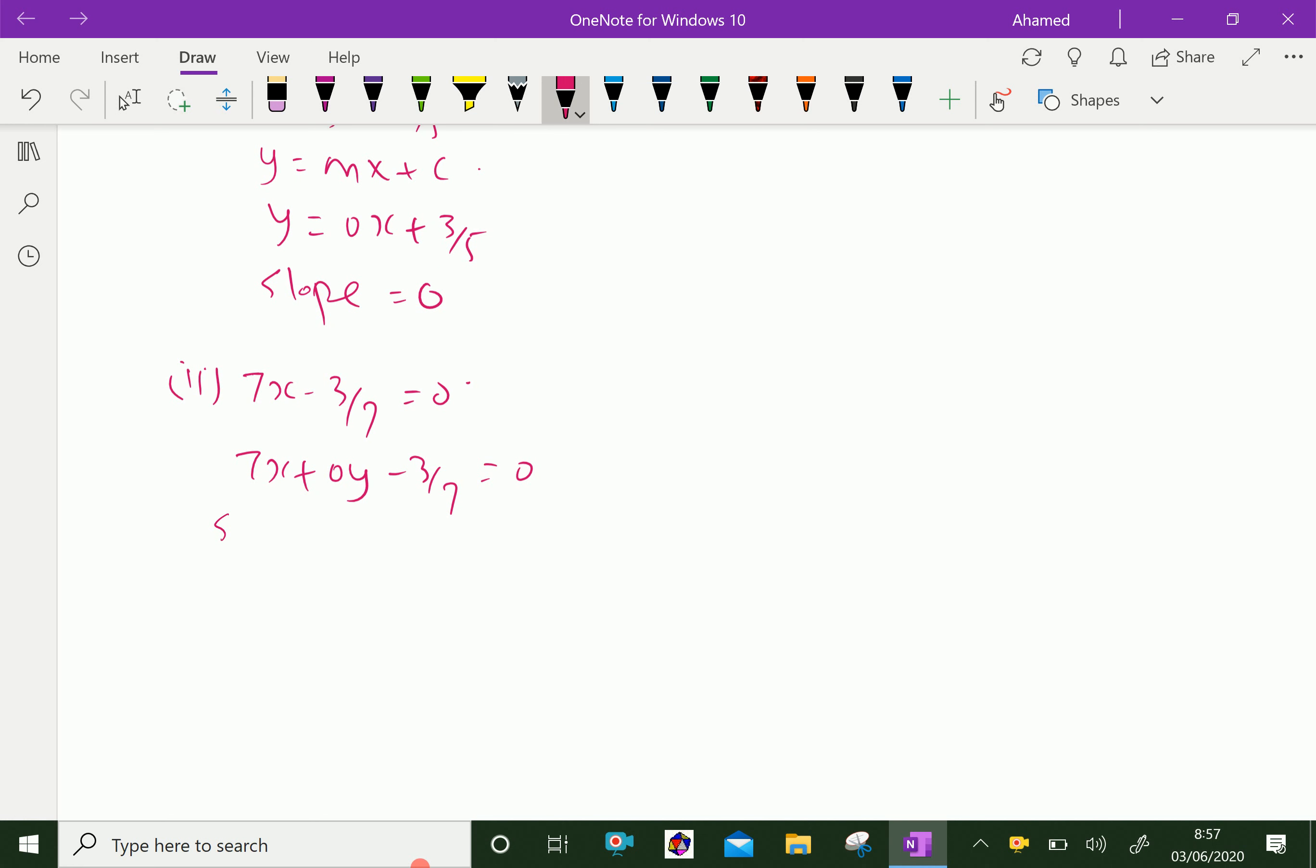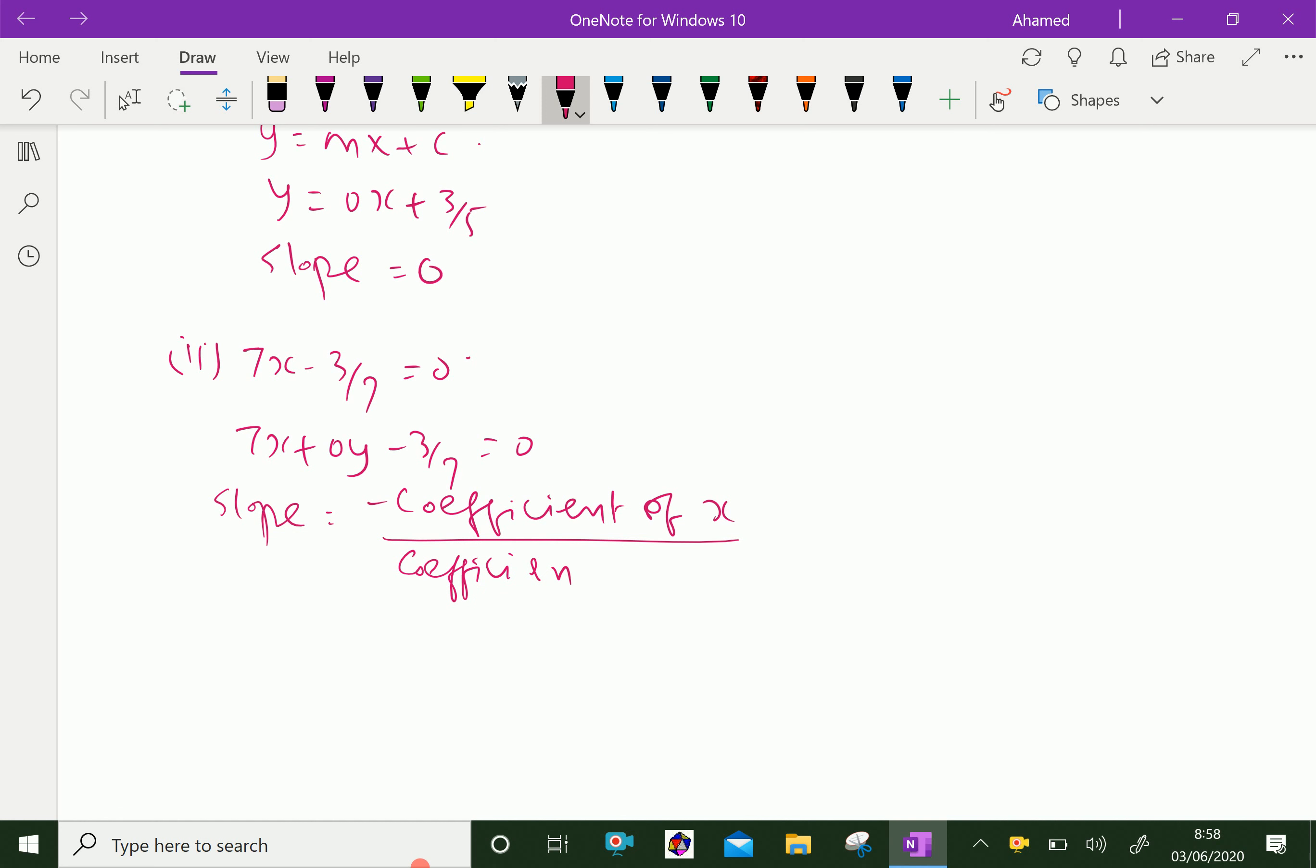Slope equals minus coefficient of x over coefficient of y. So here, coefficient of x is 7, so -7 over coefficient of y which is 0, which equals infinity. That is not defined. The slope of this equation is not defined.